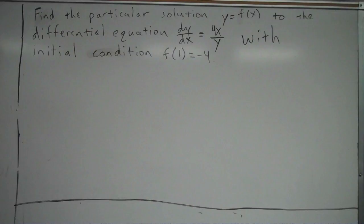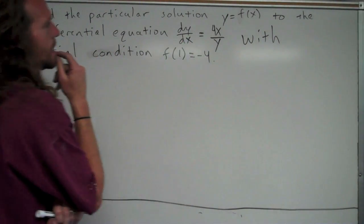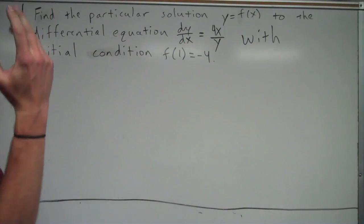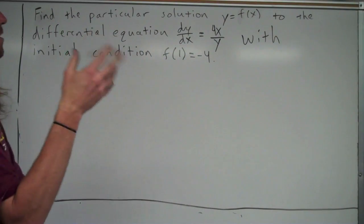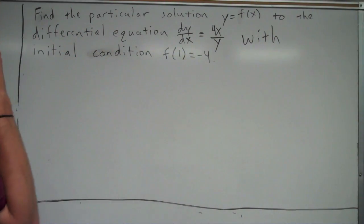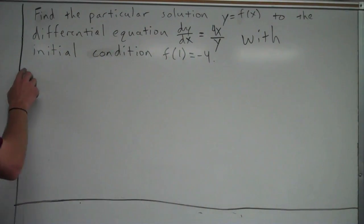There are times where they might switch it up and say something, instead of dy over dx, it could be like dA over dt, where A is some function that represents something with time changing. But regardless of the variables, the process is going to be the same.